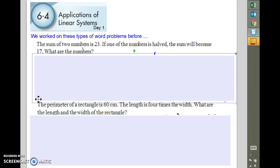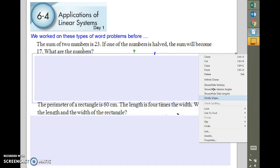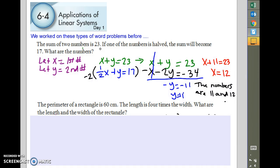Okay, so let's take a look at the first one. And if you notice in the first one, they are asking for you to find two numbers. What are the numbers? So your let statements are first number and second number. They are also giving you the sum of two numbers is 23. So here is your first equation. Your second equation is if one of the numbers is halved, the sum will become 17. Here you go. So I multiply by negative 2 to get rid of the x, eliminate the x. You get the y. Plug it back in, and your numbers are 11 and 12.